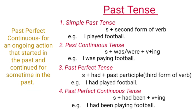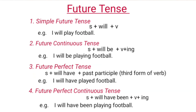And example is 'I had played football.' Past perfect continuous tense is used for an ongoing action that started in the past and continued for some time in the past. It is formed of Subject plus 'had been' plus verb plus -ing. And example is 'I had been playing football.'